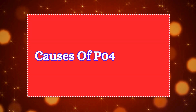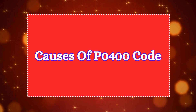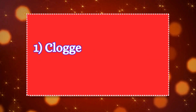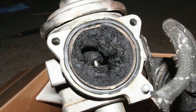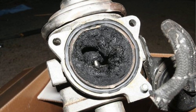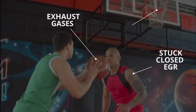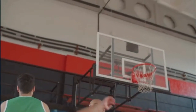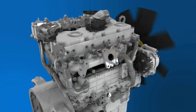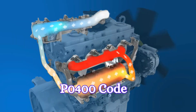Now let's discuss the main causes of the P0400 engine code. One: clogged EGR valve or passages. Over time, carbon deposits from the exhaust gases accumulate in the EGR valve and the associated passages. This buildup restricts the flow of exhaust gases back into the intake manifold, which affects the performance of the EGR system, triggering the P0400 engine code.